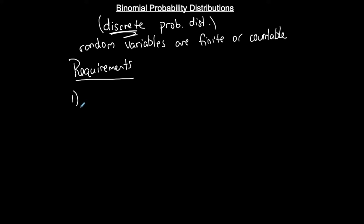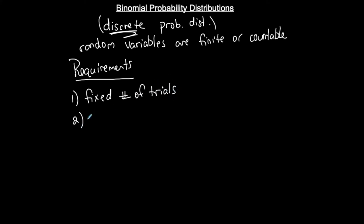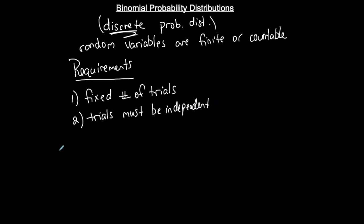The first requirement to be considered a binomial probability distribution is we need a fixed number of trials. Each trial must be independent — the probability of one occurring should not affect the next.